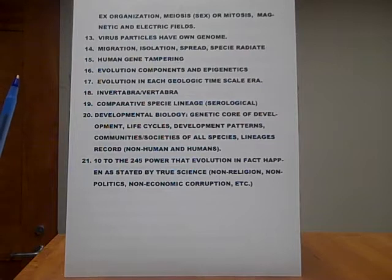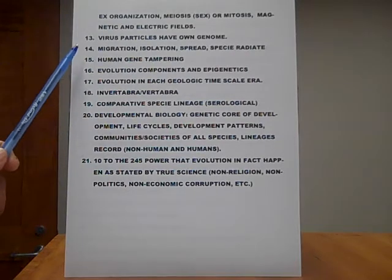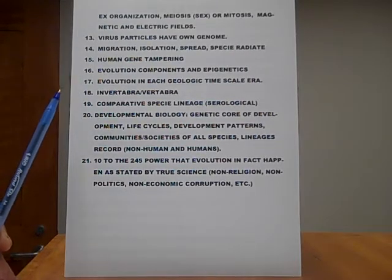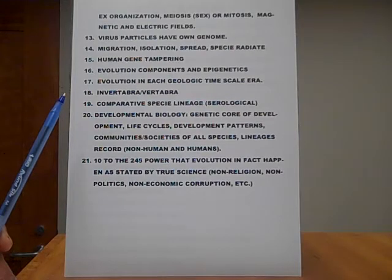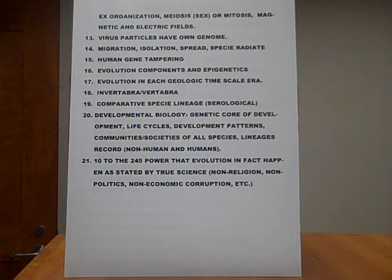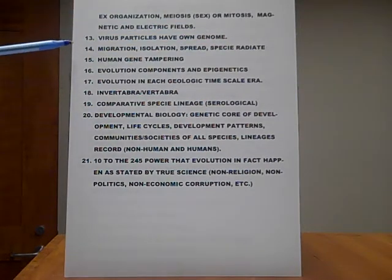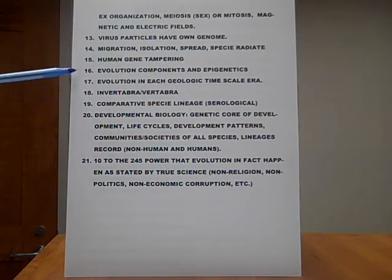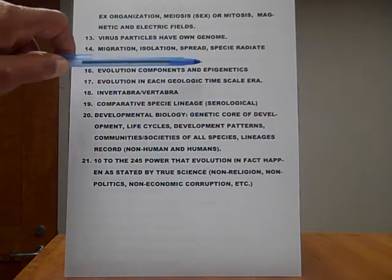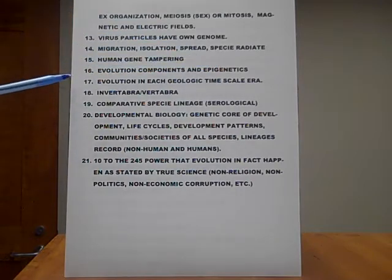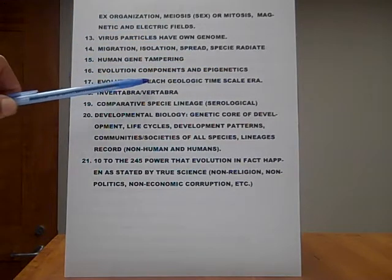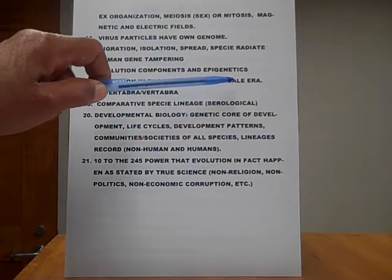Number thirteen: virus particles have their own genome. Fourteen: migration, isolation, spread, radiation of species from all over the place, from every direction — a species radiates. Fifteen: human gene tampering. Sixteen: evolution components and epigenetics. Number seventeen: evolution in each geologic time scale era.